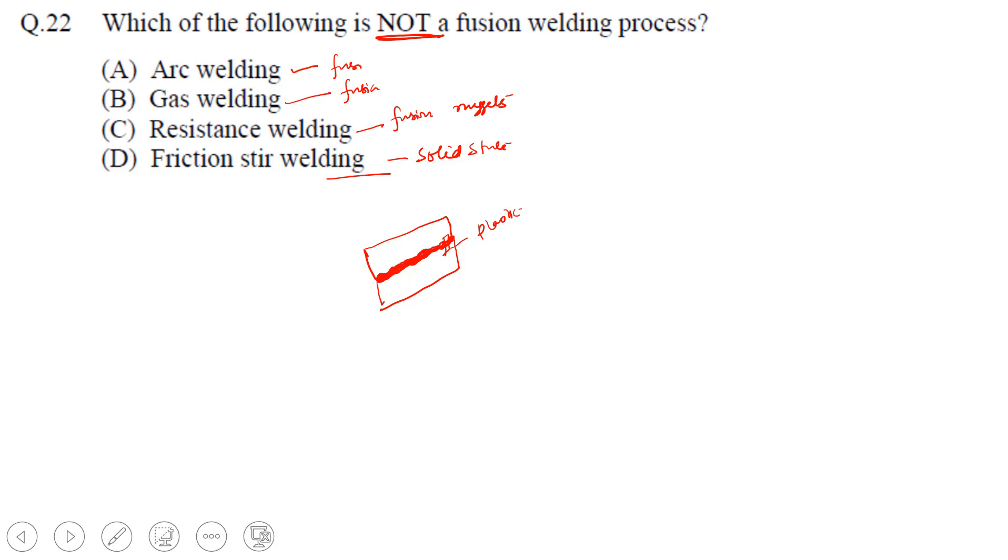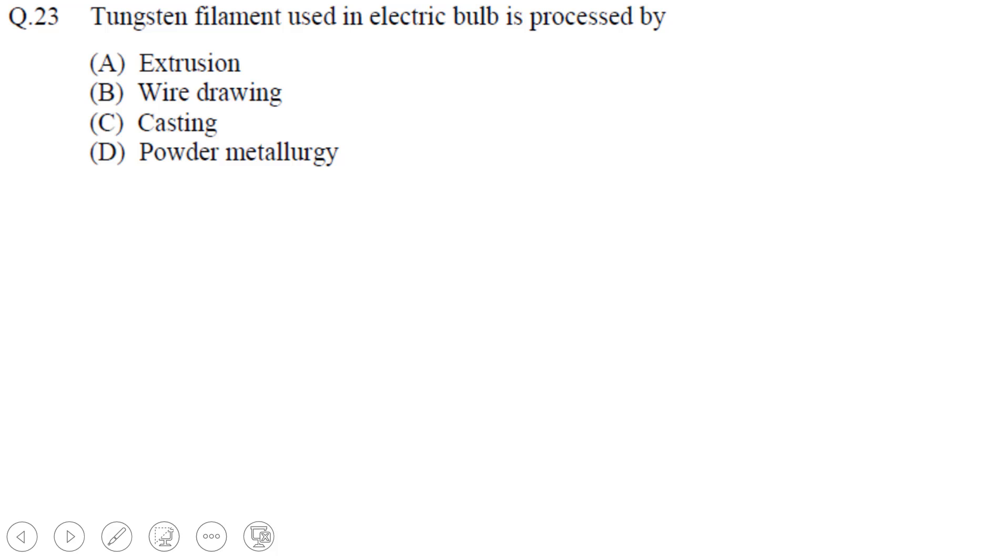Next question: tungsten filament used in electric bulb is processed by powder metallurgy. This is a very famous question. Why powder metallurgy? Because tungsten has a melting point of more than 3000 degrees Celsius, so it is very difficult to melt it and solidify. Initially we invest some amount of energy to produce powders of tungsten and then we make it using powder metallurgy.